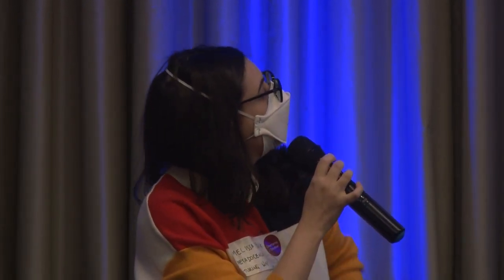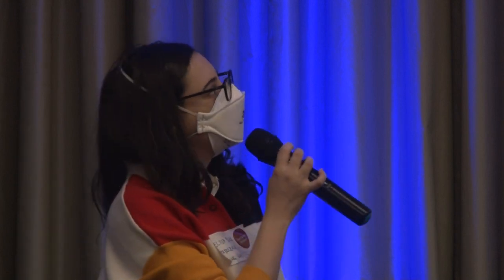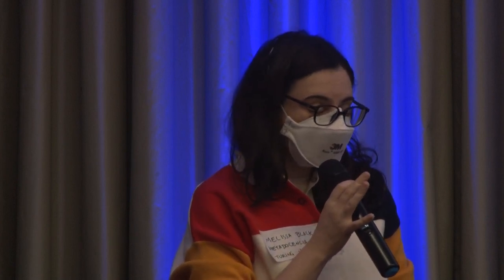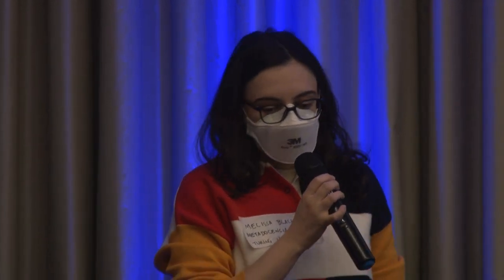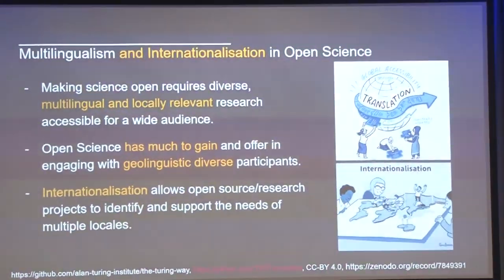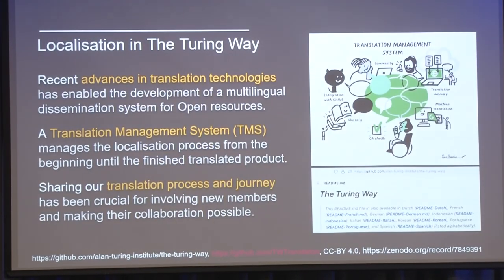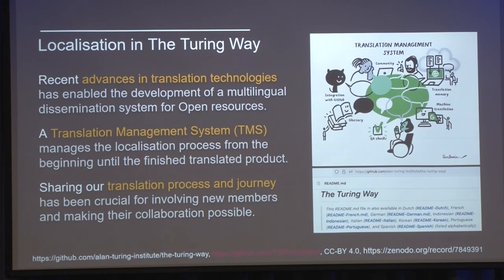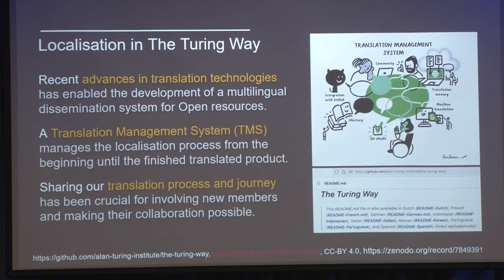We're speaking in the realm of multilingualism and open science, internationalization and open science. Making science open requires that we have locally relevant resources — that's what localization is about, more than simply translating. Open science has a lot to learn from the communities invited to participate when they're able to have resources in their own languages. It allows open science resources to be more about local identities and not about something that feels alien to them.